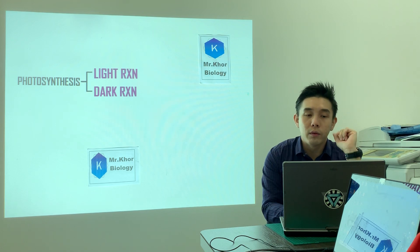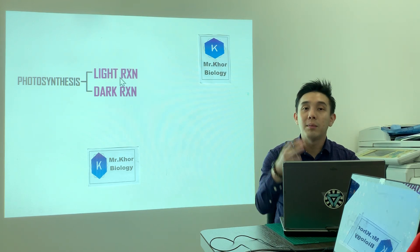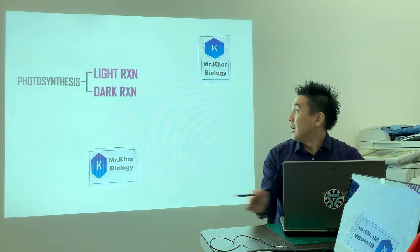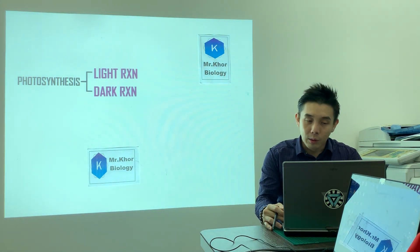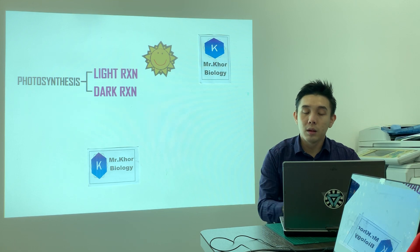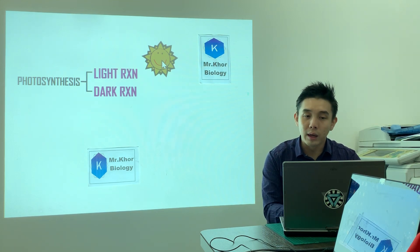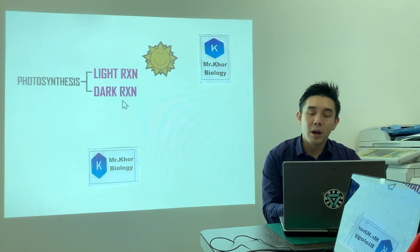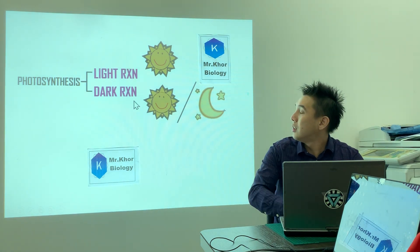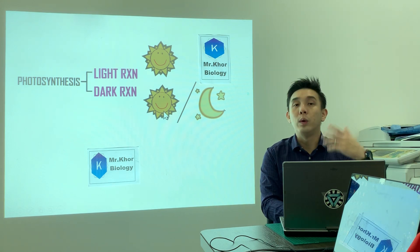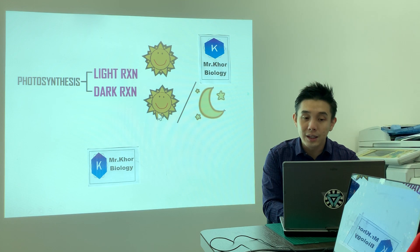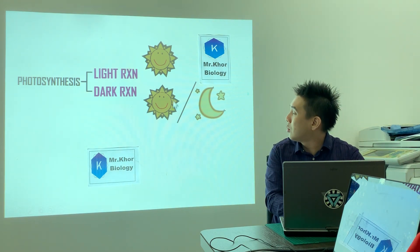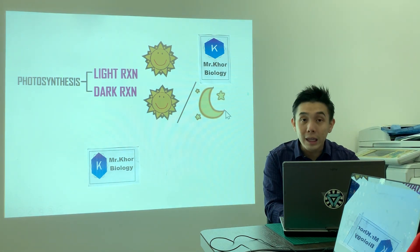Photosynthesis involves two processes: light reaction — 'tindak balas cahaya' in Malay — and dark reaction — 'tindak balas gelap'. Light reaction occurs when there is sunlight. Dark reaction occurs without depending on light, meaning it can happen both during the day and at night.